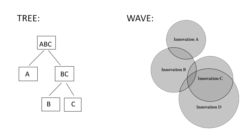When I was a school kid I had this idea about languages. Languages, instead of having a tree structure, they have a structure similar to sets in mathematics. Why is that? Because languages are not created from one common ancestor, but instead they are a mixture of different languages.